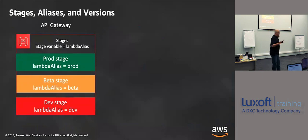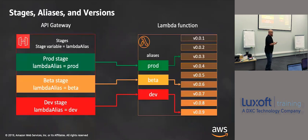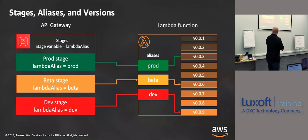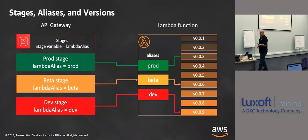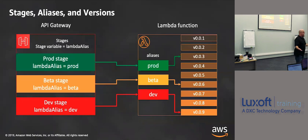This goes back to the idea of Lambda stages — I might have multiple stages on the gateway: a beta, a dev, and a prod, mapped to specific Lambda versions. Lambda has aliases and versions. My alias would be 'prod' and my versions would be like version 3, version 6, version 9. If you're looking at this and scratching your head wondering why you'd ever use this — probably you won't, to be honest. It's available in case you need to manage different ones, but it's not how we suggest it.